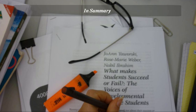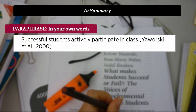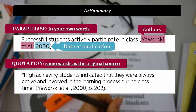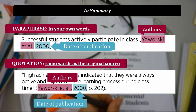In summary: a paraphrase is in your own words, and an in-text citation for a paraphrase includes the author's name and date of publication. A quotation has the same words as the original source, and an in-text citation for a quotation includes the authors, date of publication, and also the page number with the quote in double quotation marks.